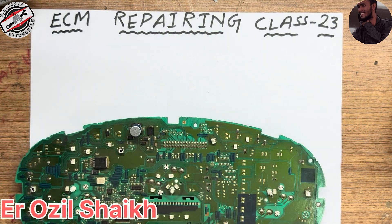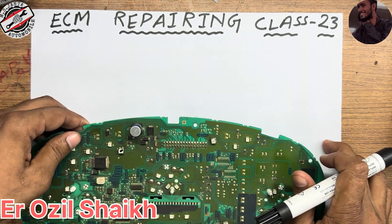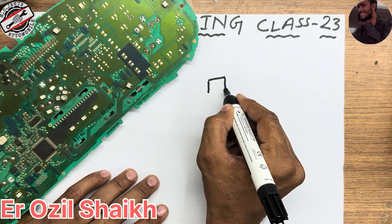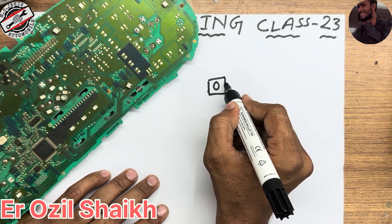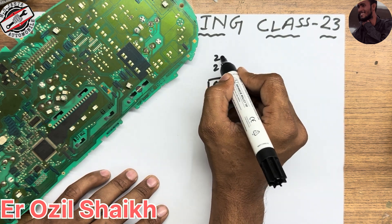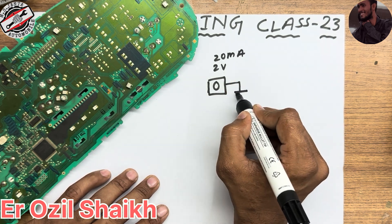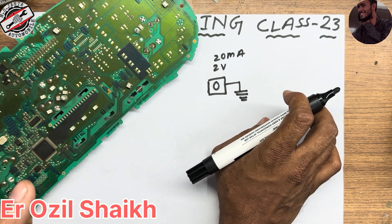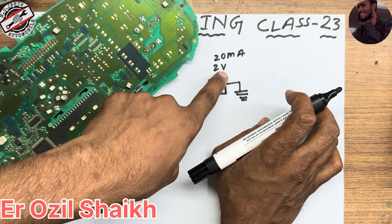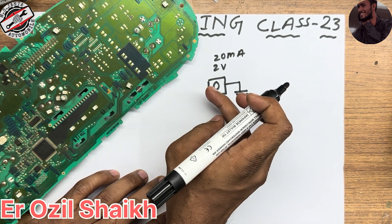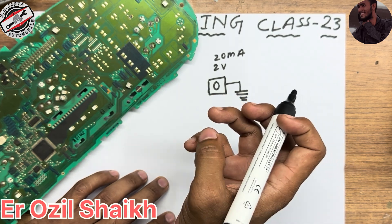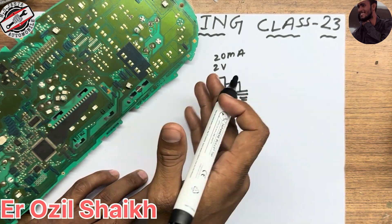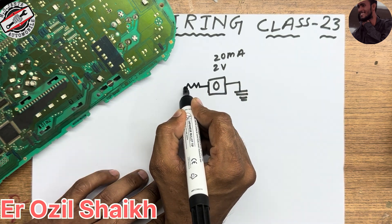I'm going to explain each and everything and which formula is used in this process. If you buy an LED like this, and the LED is 2 volt, 20 milliampere — the shopkeeper told you it works on 2 volt and 20 milliampere — you have to find the resistance because you have a 12 volt battery and the LED glows on 2 volt. So how do you drop the 10 volts? I'll just make a diagram.